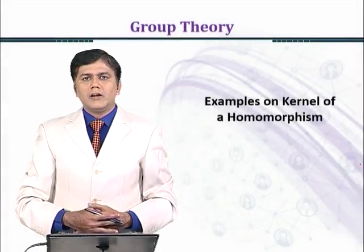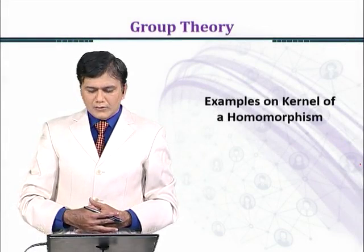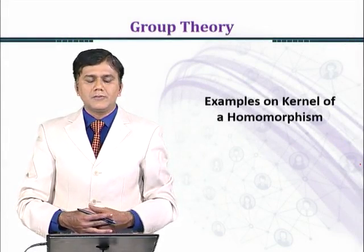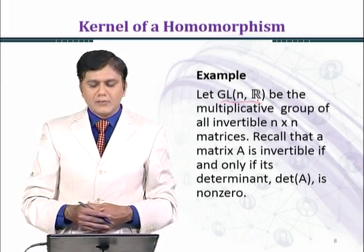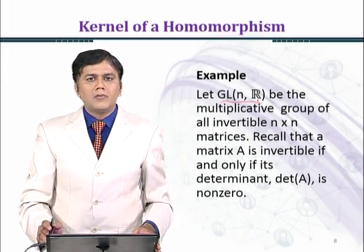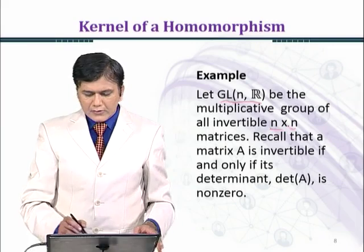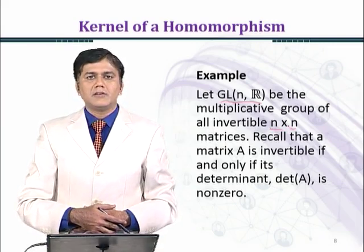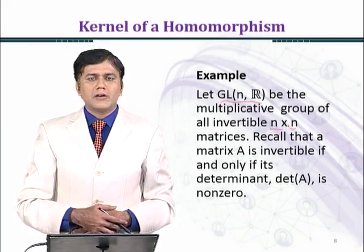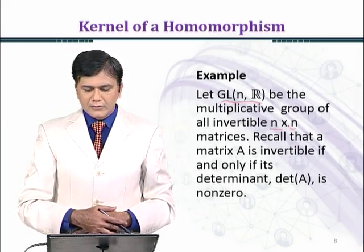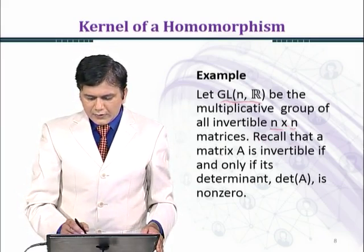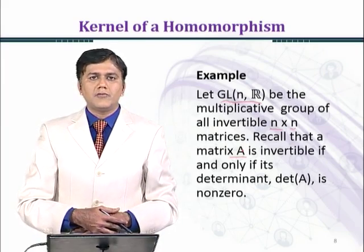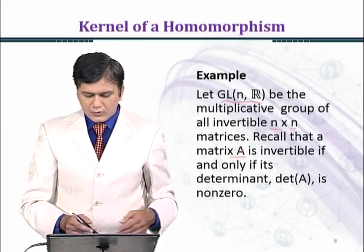In this module, we shall consider some more examples concerning the kernel of a homomorphism. Let GL(n,R) be the multiplicative group of all n by n invertible matrices — the general linear group of order n by n with entries in the set of real numbers. Recall that a matrix A is invertible if and only if the determinant of A is not equal to zero.